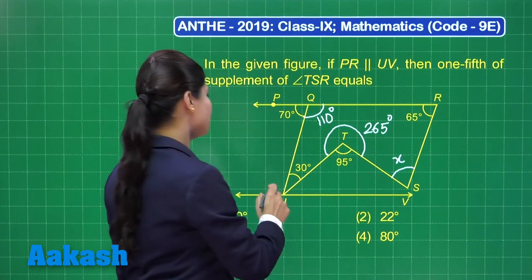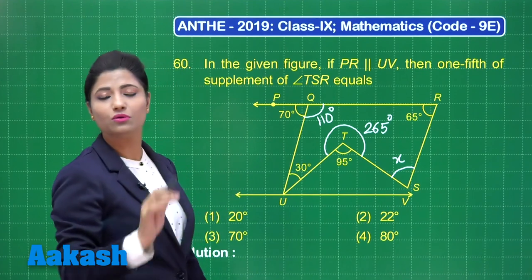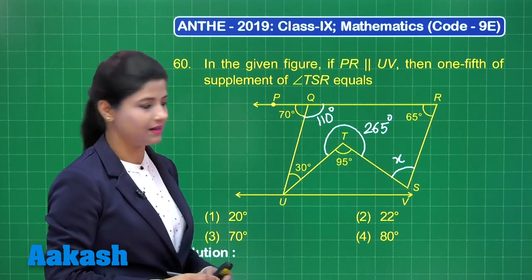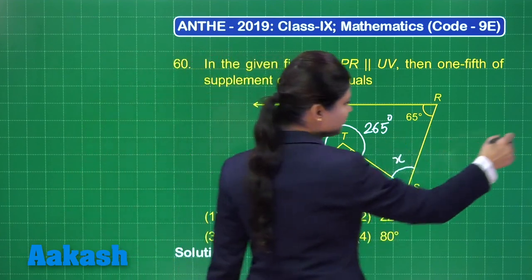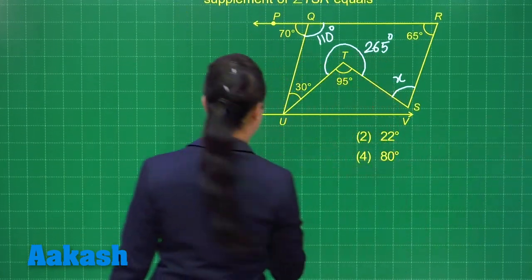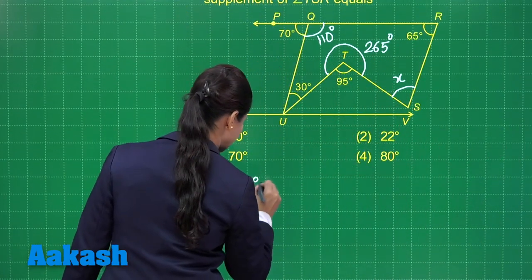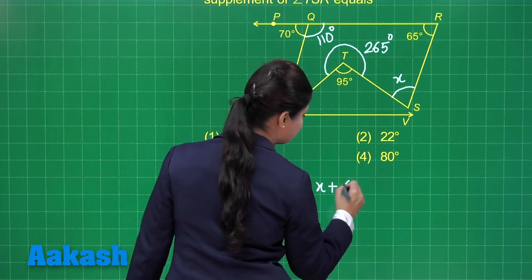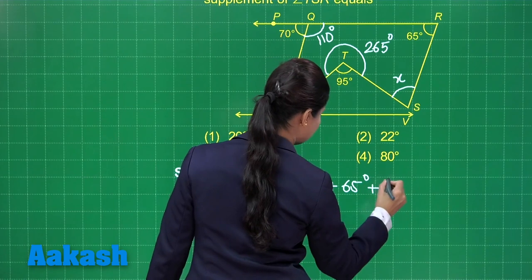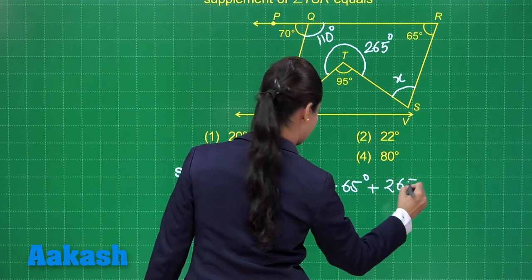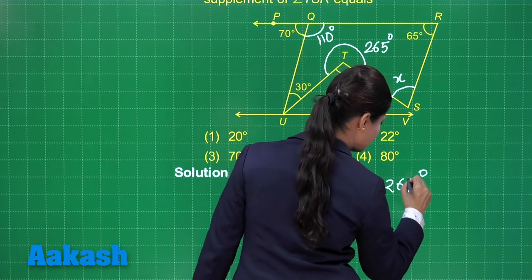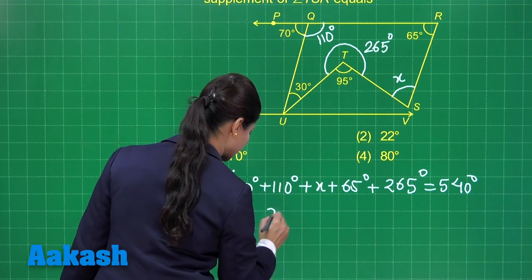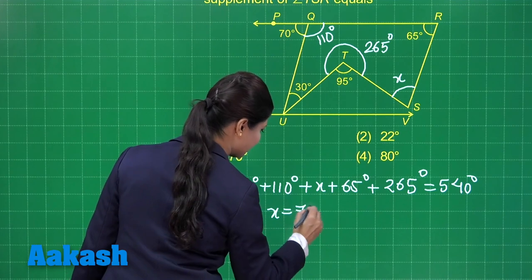Observing pentagon UTSRQ, the sum of its 5 angles is 540 degrees. So: 30 degrees plus 110 degrees plus x plus 65 degrees plus 265 degrees equals 540 degrees. Simplifying this gives x equal to 70 degrees.